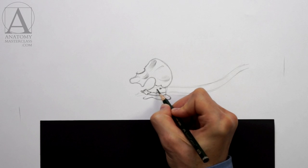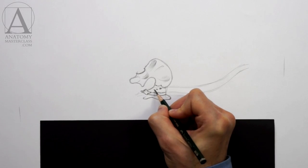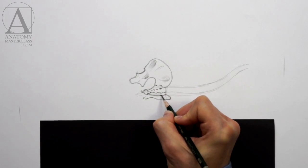The sacrum is the central structure of the pelvis. It consists of five vertebrae fused together into one triangular bone.